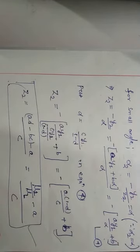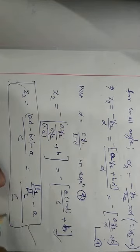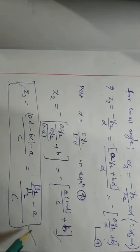The important points to remember: the nodal points of the thick lens, the principal points, and in generalized form — second principal point (A−1)/C, first principal point (D − μ1/μL)/C, second focal point −1/C, and first focal point μ1/μL × 1/C. These are the formulas we need to remember for the topics we will discuss next.